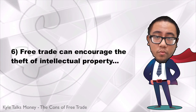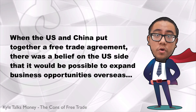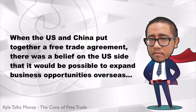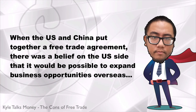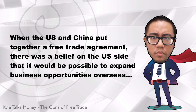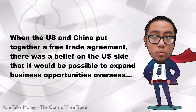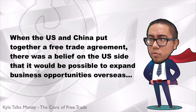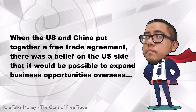Number six: free trade can encourage the theft of intellectual property. When the United States and China put together a free trade agreement, there was a belief on the American side that it would be possible to expand business opportunities exponentially with market access overseas. Then reality hit. Chinese companies, which are mostly owned by the government, required Americans to sign over their intellectual property rights as a way to gain access to the market. It created a net win for China and a net loss on the US side, because if American companies refused, the Chinese ones just stole it anyway.